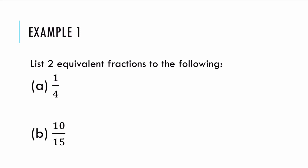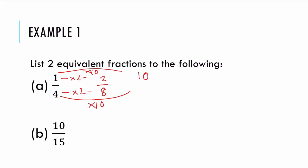Let's go through an example where I'm going to list two equivalent fractions. So, one over four — I can pick any number to multiply the bottom by. Let's say I choose two: times by two, and as long as I times the top by two as well, I get an equivalent fraction. Let's say I choose to times the bottom by ten — as long as I times the top by ten, I get another equivalent fraction. So one over four, two over eight, and ten over forty are all equivalent fractions.